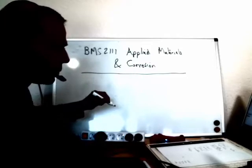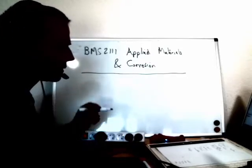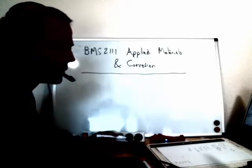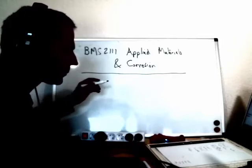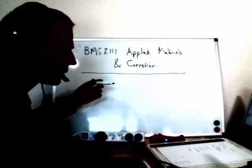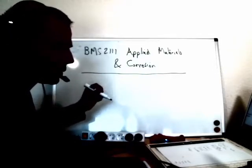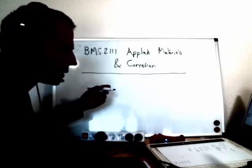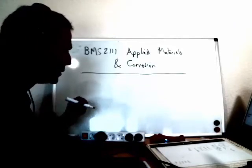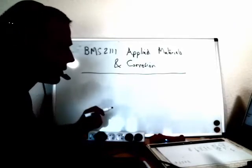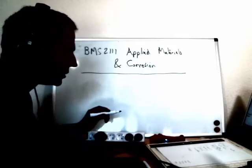Where we're going to start is at the end with corrosion, because that's one of the main ways that materials fail. Corrosion is a relatively large topic, including electrochemistry and another type of diagram that we will introduce very shortly.